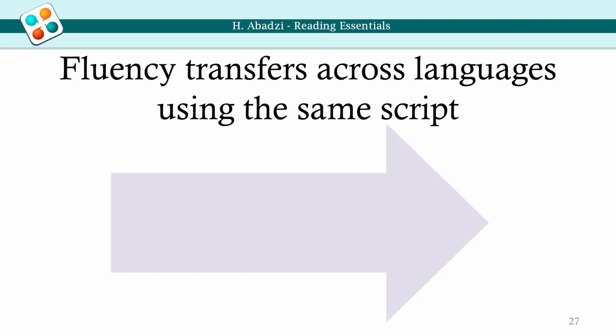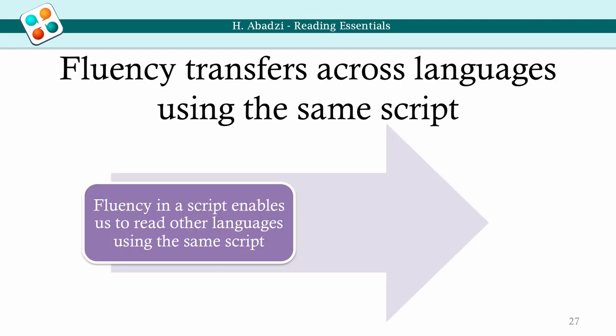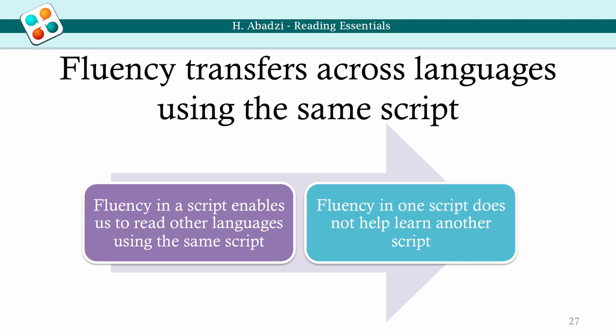If we are automatic readers in the Roman script, we can read anything in it — from Turkish to Bahasa. All we need to know is pronunciation rules. To actually learn the language is a different process, but if we already know the script, we will not struggle with the letter shapes. This concept is the basis for teaching children of minority languages to read in their own language first. However, this only happens within the same script. Automaticity in the Roman script does not usually help learn another, such as Arabic or Armenian — only phonological awareness and general reading strategy transfer.